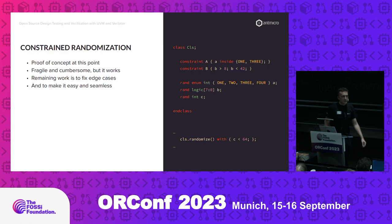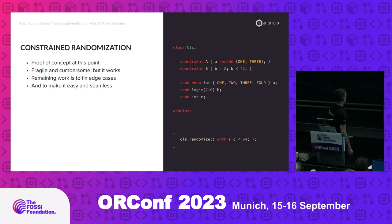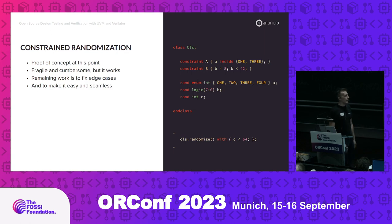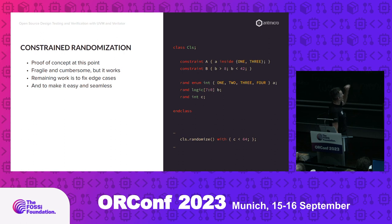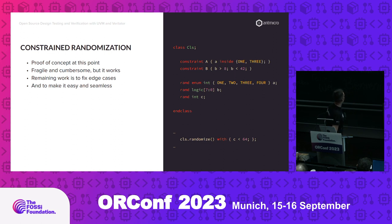One more thing we've been working on is constrained randomization — this is just a proof of concept. It's not strictly related to UVM but it's often used with it. It's not yet in Verilator but we have it on a branch. Right now it's very fragile and cumbersome, but on that development branch we can run code with constraints and generate values of variables within those constraints. The remaining work is to make it easy to use and seamless.